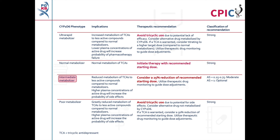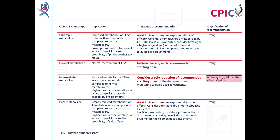Patients with a CYP2D6 intermediate metabolizer phenotype will have reduced metabolism of TCAs to less active compounds. A 25% reduction in the recommended starting dose should be considered for these patients. For patients with a CYP2D6 activity score between 0.25 and 0.75, this is a moderate recommendation. For patients with a CYP2D6 activity score of 1, this is an optional recommendation.